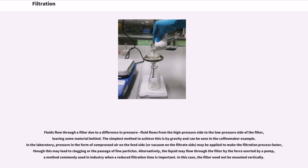Fluids flow through a filter due to a difference in pressure. Fluid flows from the high pressure side to the low pressure side of the filter, leaving some material behind. The simplest method to achieve this is by gravity and can be seen in the coffee maker example.